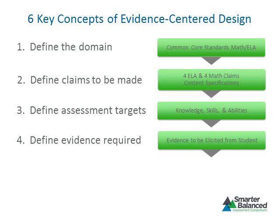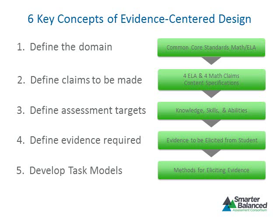Once the types of evidence to collect are known, the next step focuses on describing the characteristics of items and tasks that will elicit that evidence. The characteristics of an item or task are presented as a task model. A task model is a general description of an item or task — it can be thought of as a set of instructions that can be used to develop different versions of an item or task. What is important about a task model is that it is designed to collect evidence about the knowledge, skill, or ability that is contained in the standards.